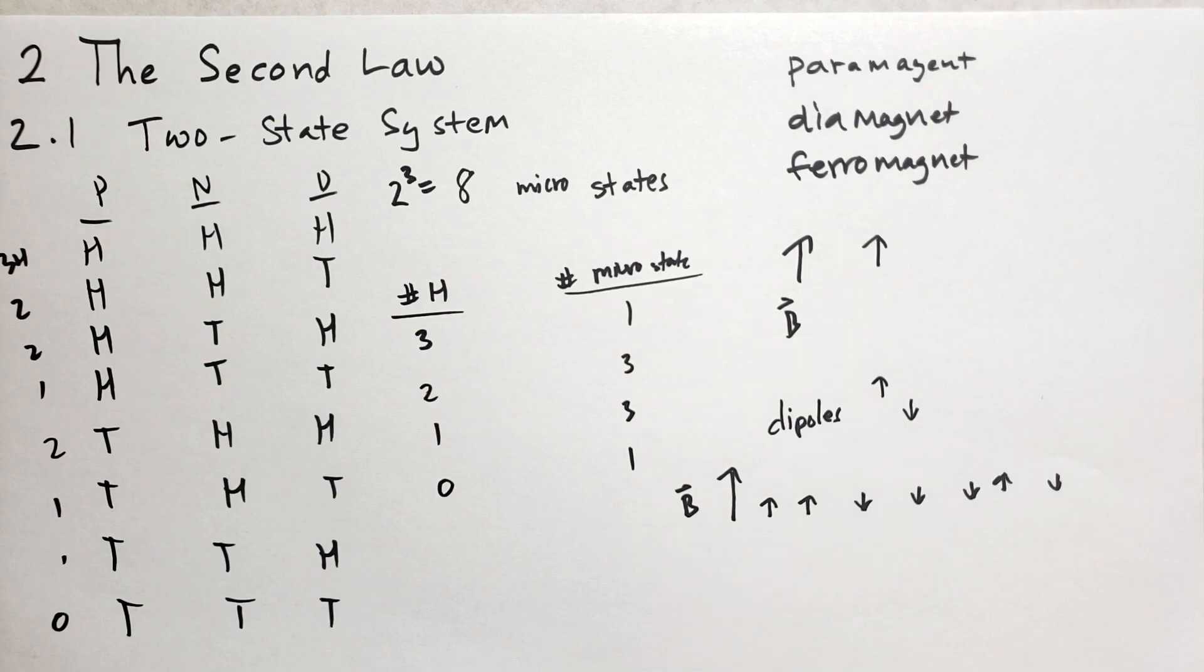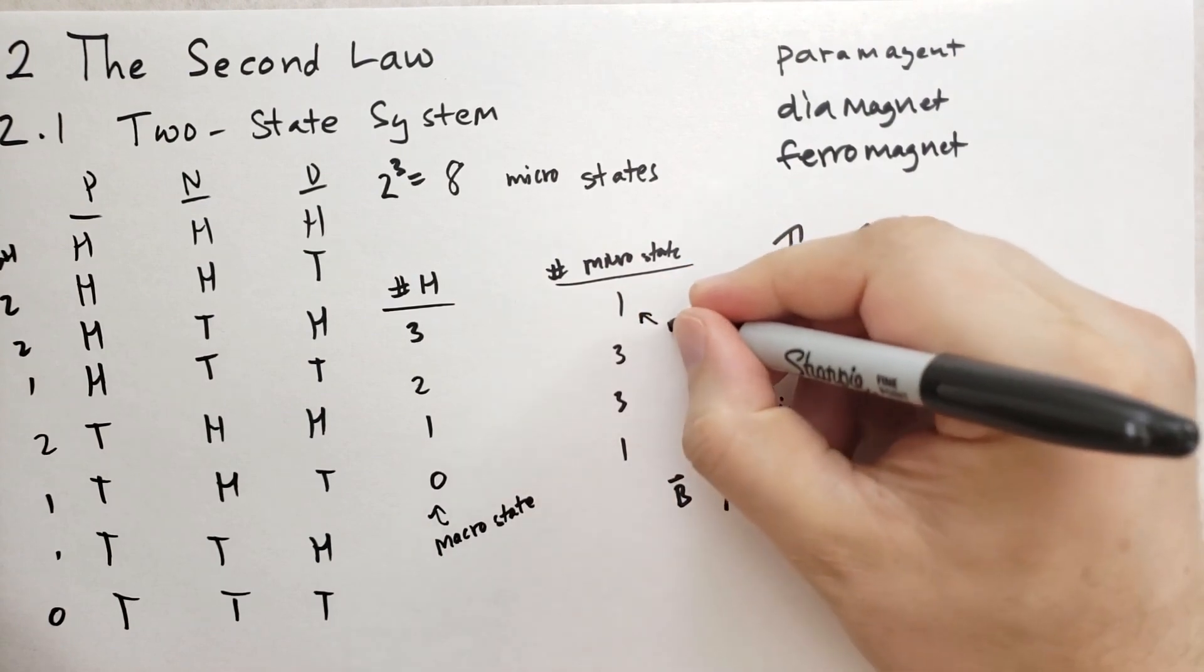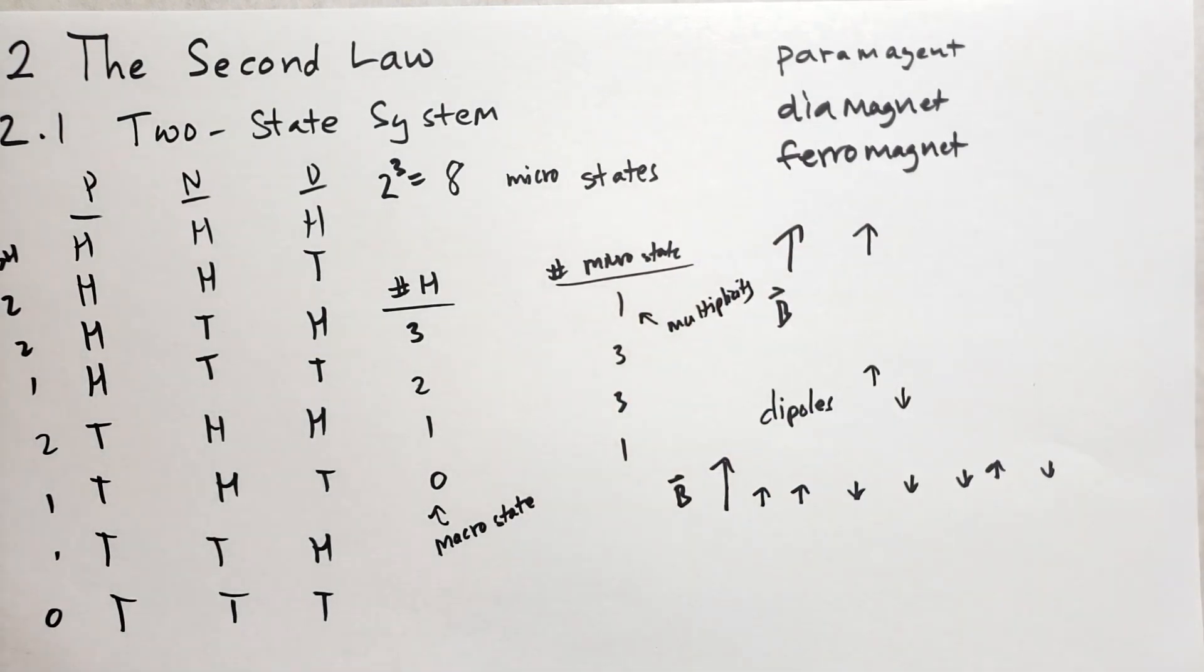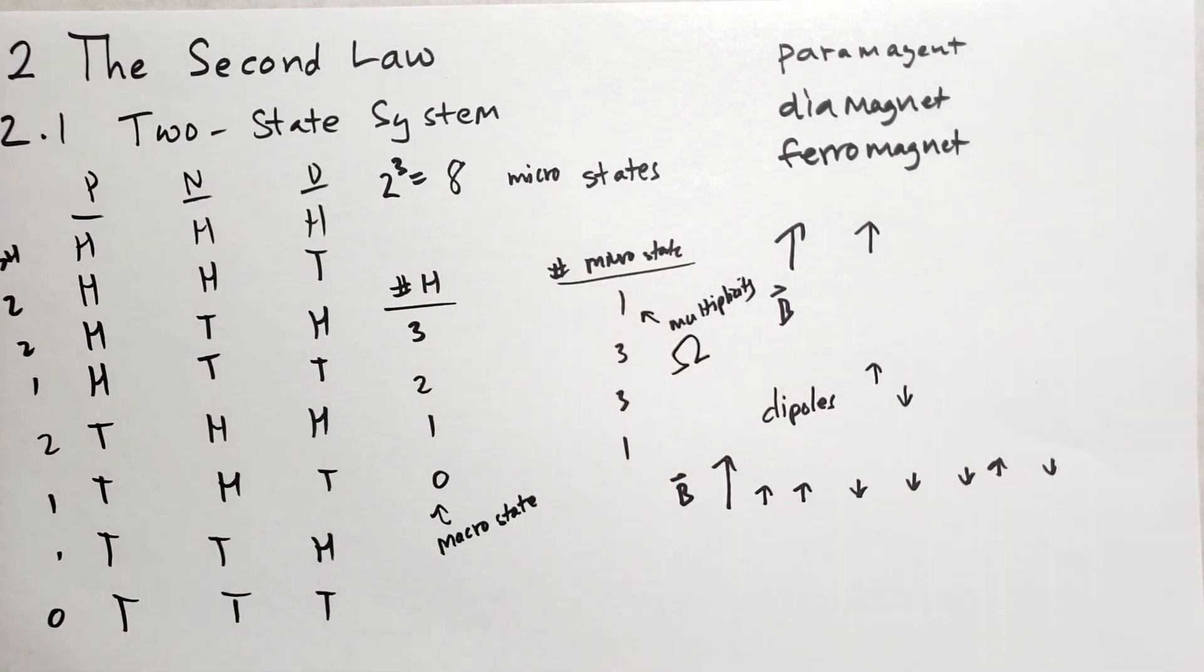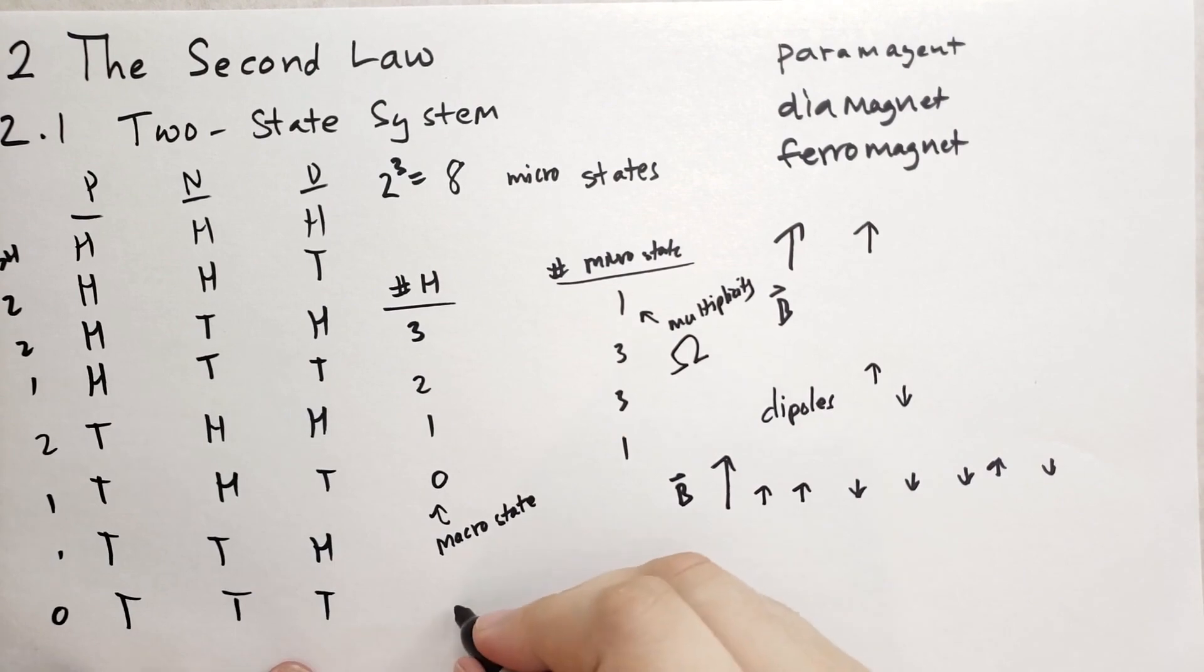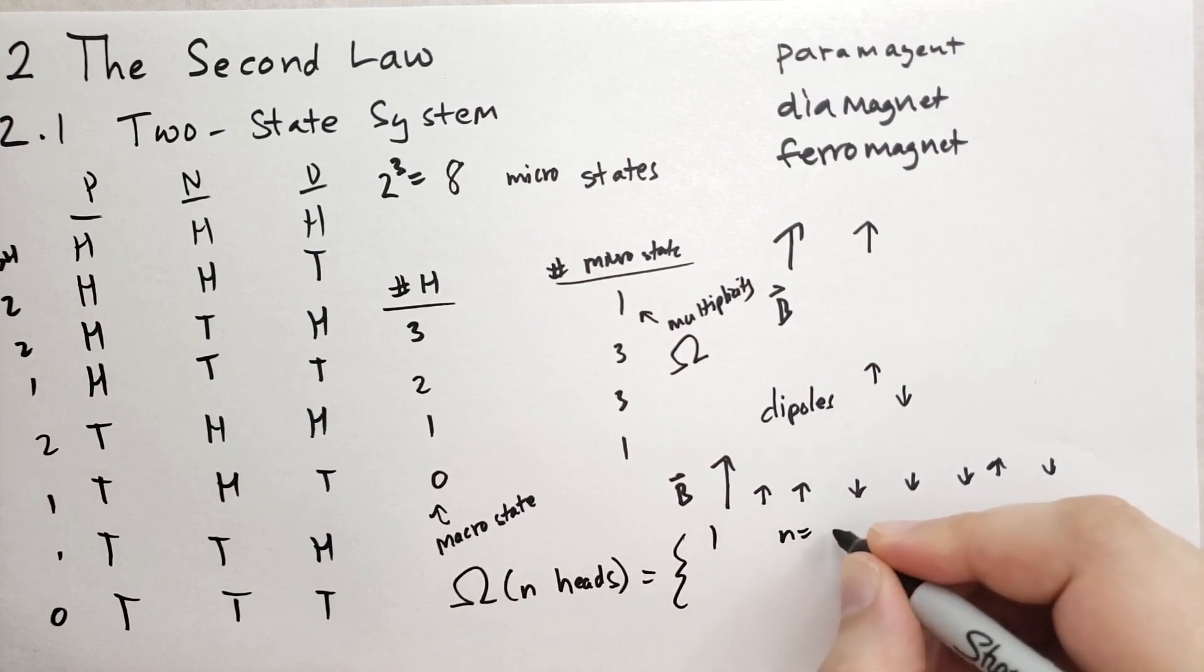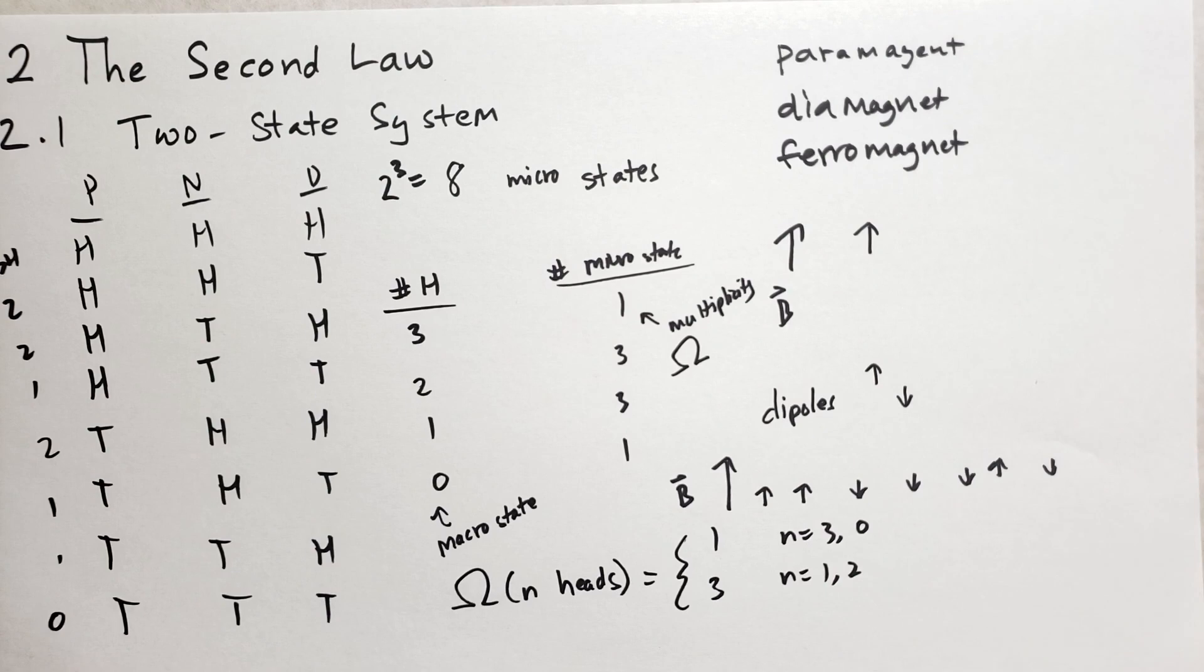And so this is the macrostate. We're going to call this a macrostate. This number here, we're going to call this the multiplicity. And the multiplicity, we're going to use the Greek letter omega. And so in this case, we're going to say omega, the number of heads, equals one of these numbers. It's going to be one or three. That's our omega function.